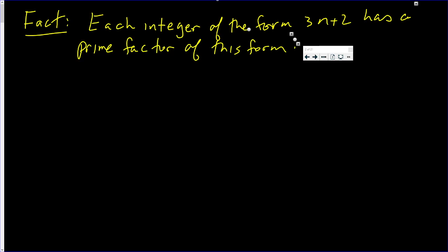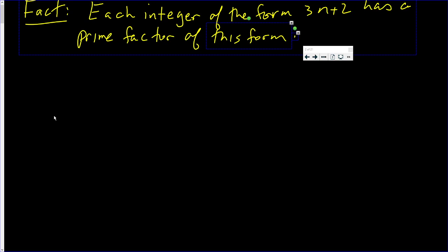Fact: Each integer of the form 3n plus 2 has a prime factor of the same form. Very interesting statement.